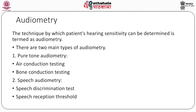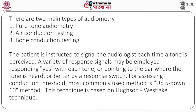Depending on this threshold, the patient's hearing sensitivity can be estimated by obtaining an audiogram. An audiogram is a plot of threshold intensity versus frequency. There are two main types of audiometry. First, pure tone audiometry, which includes air conduction testing and bone conduction testing. The patient is instructed to signal the audiologist each time a tone is perceived — by responding yes, pointing to the ear where the tone is heard, or using a response switch. For assessing conduction threshold, the most commonly used method is the up-5 down-10 method, based on the Hughson-Westlake technique.